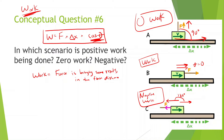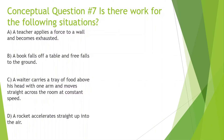When we do some examples it's going to make more sense. First: a teacher applies a force to a wall and becomes exhausted. If we have this wall here and the teacher's pushing it, there's not going to be any work — no work — because the wall doesn't move. No matter how much force you apply, we don't do any work unless something is moving in the direction of the force.